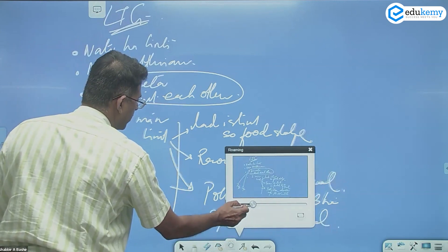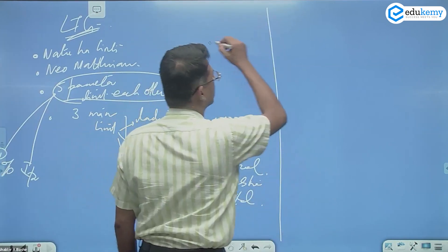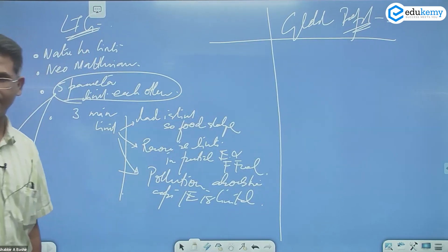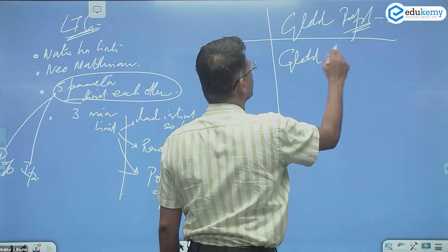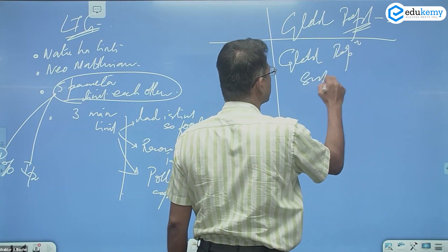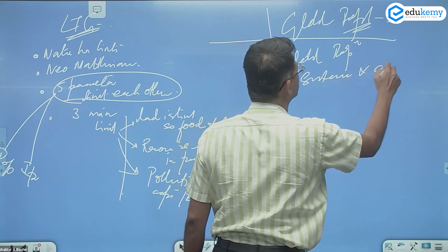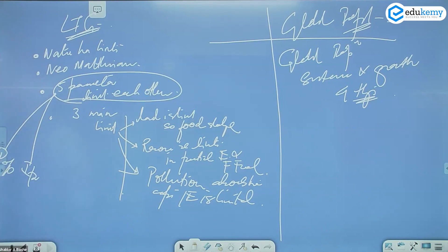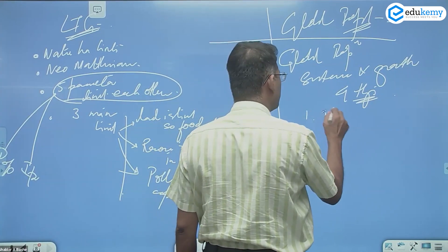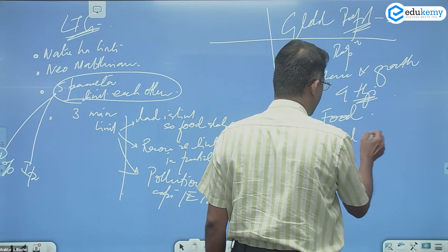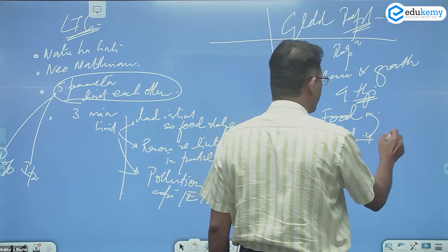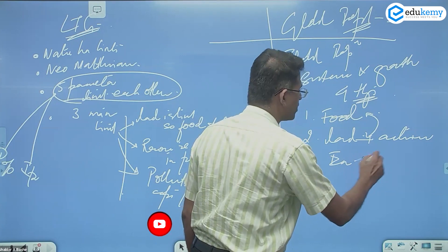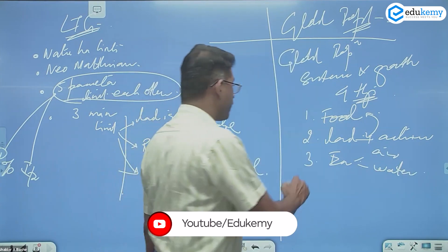If you compare the global population and see it's applicable or not, global population for its sustenance and growth four things required: number one we need food, number two we need land, land and food related plus land for activities.